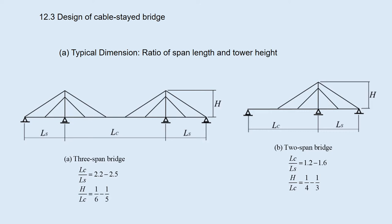12.3 Design of the Cable-stayed Bridge. I will explain the basic design parameters and considerations to plan and design the cable-stayed bridge. The typical ratio of the span length and the tower height are shown here.